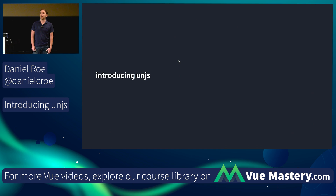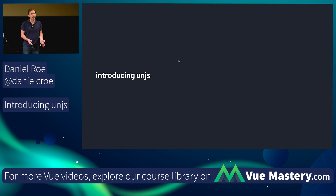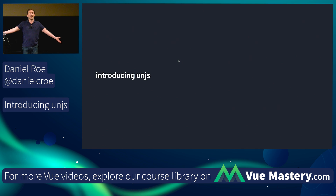UnJS is all about universal JavaScript. It was created out of Nuxt — we found we were creating utilities internally but didn't want them to be ecosystem-specific or Nuxt-only. So we pulled them out, collaborated with other people, and made them as useful as possible. Today I want to tell you about the utilities we created that you can use in your own projects, whether or not you're using Nuxt.